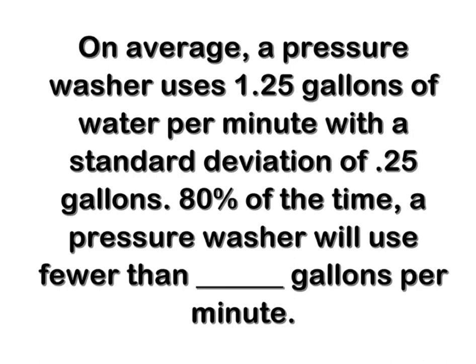On average, a pressure washer uses 1.25 gallons of water per minute with a standard deviation of 0.25 gallons. 80% of the time, a pressure washer is going to use fewer than how many gallons per minute? We're looking to say 80% of the time we're going to use fewer than x gallons, and the other 20% of the time we're going to use more.